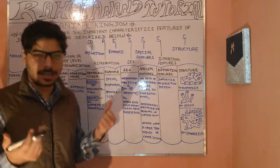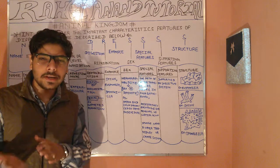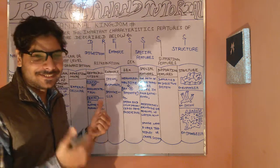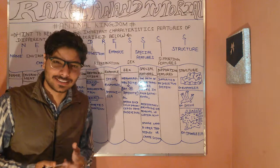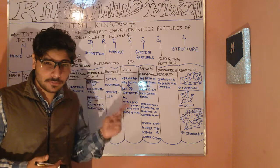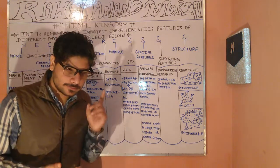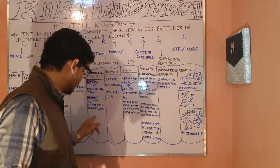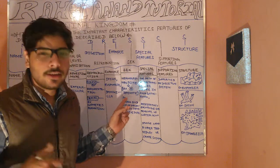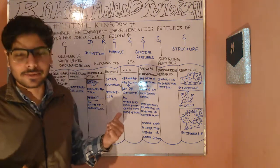D stands for digestion mode. In Porifera, the mode of digestion is intracellular. Next is R for reproduction. Reproduction occurs in two modes: fragmentation, which is the asexual mode, and gamete formation, which is the sexual mode.